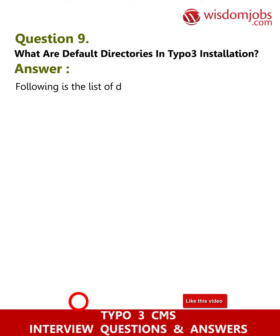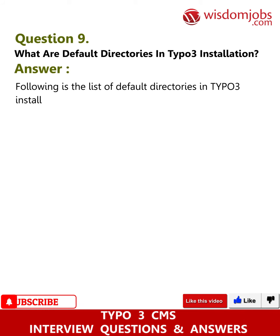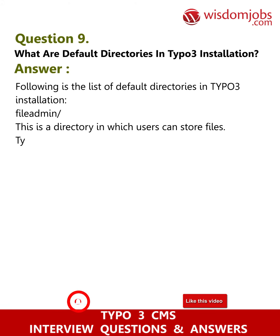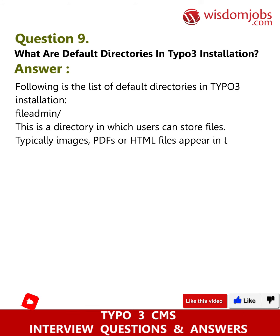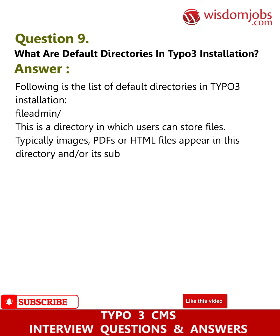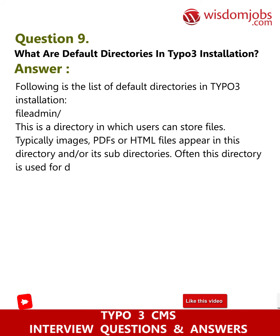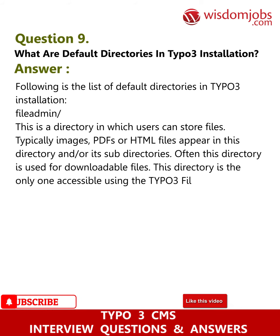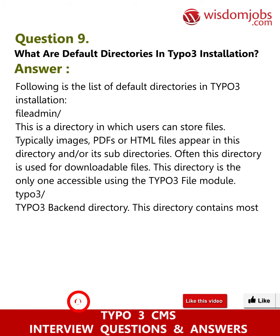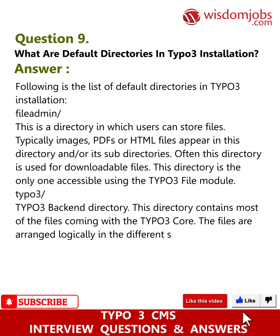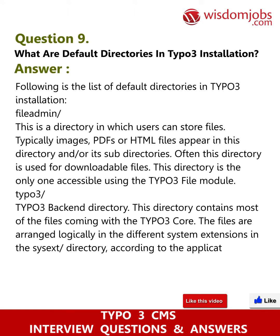Question 9: What are the default directories in a TYPO3 installation? Answer: The list of default directories includes: fileadmin/ - a directory in which users can store files, typically images, PDFs, or HTML files. Files appear in this directory or its subdirectories; often this directory is used for downloadable files. This directory is the only one accessible using the TYPO3 file module. typo3/ - the TYPO3 backend directory; this directory contains most of the files coming with the TYPO3 core, arranged logically in different system extensions in the sysext/ directory according to the application area of the particular file.